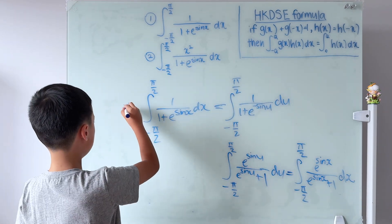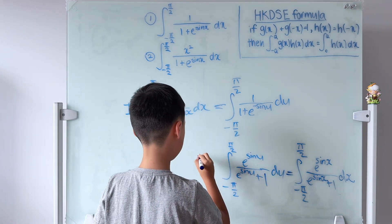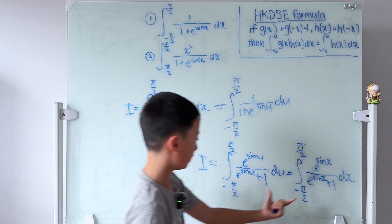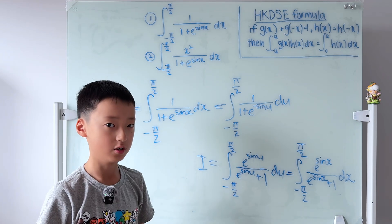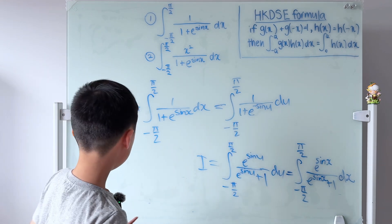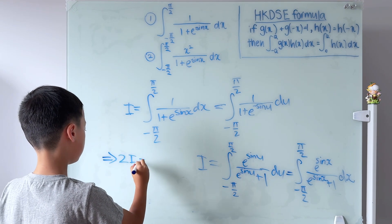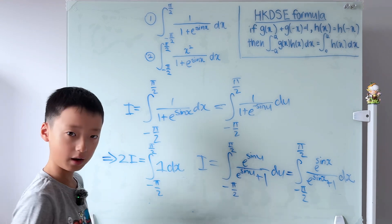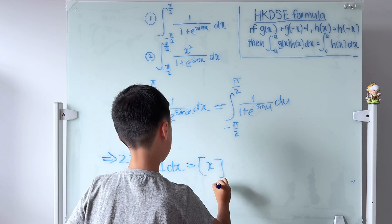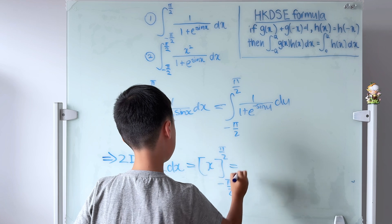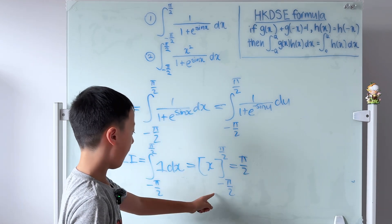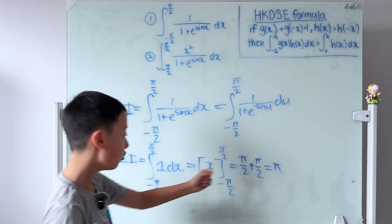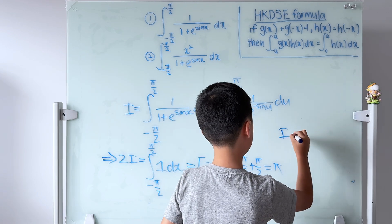Letting i equal the original integral, i also equals this new integral. Adding the two together: the denominators are the same, and the numerator becomes the denominator, giving 1. So 2i = the integral from −π/2 to π/2 of 1 dx = x from −π/2 to π/2 = π/2 − (−π/2) = π. Therefore i = π/2.